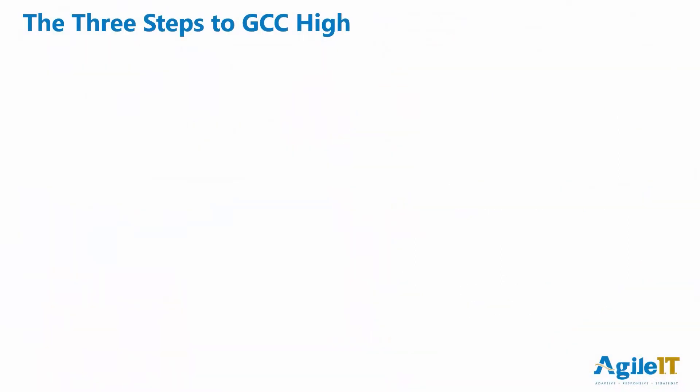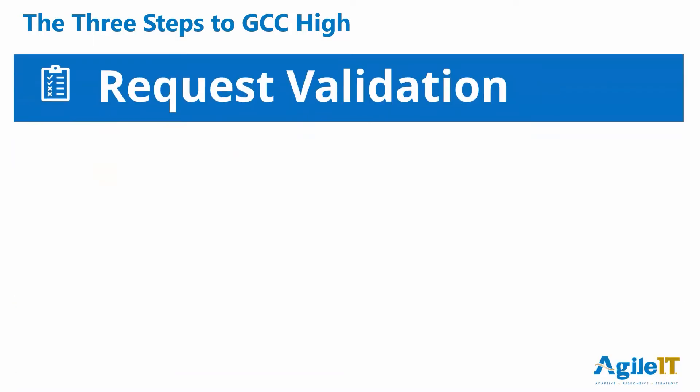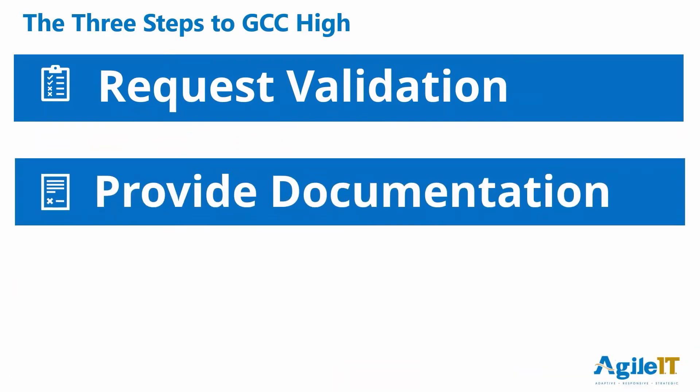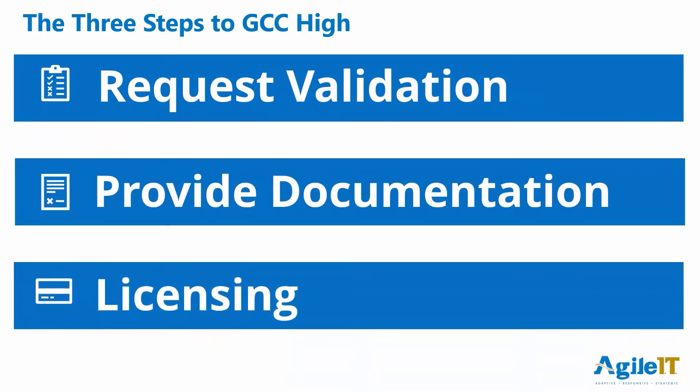While there is some complication along the way, it's helpful to think of this as a simple three-step process. First, there's requesting validation. Then you'll need to provide proof of eligibility. And finally, you'll need to submit for licensing. Failure to do these first two correctly and getting the wrong validation will really throw a wrench into the licensing process — particularly after you've paid for everything and find out you're a Category 2 instead of a Category 3 entity and have to start the whole process over.